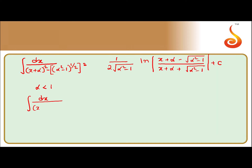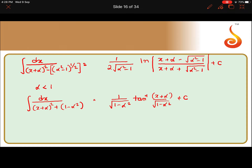The same approach applies when alpha is less than 1. In that case, dx by x plus alpha whole square plus 1 minus alpha squared gives an answer in tan inverse form: 1 by under root of 1 minus alpha squared times tan inverse of x plus alpha by under root of 1 minus alpha squared. So alpha is a very important condition — when alpha is greater than 1, the answer is in terms of log; when alpha is less than 1, it is in terms of tan inverse.